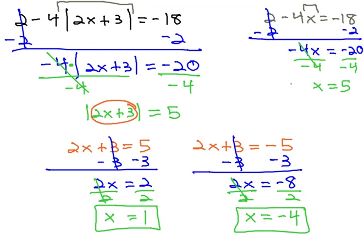We got this solution by first getting the absolute value alone by subtracting 2 and dividing by the negative 4, and then considering both the positive and negative results once the absolute value is alone.